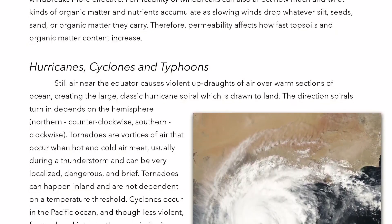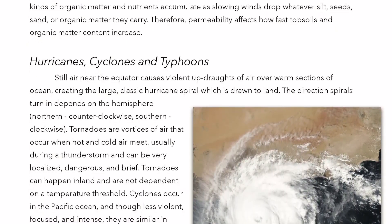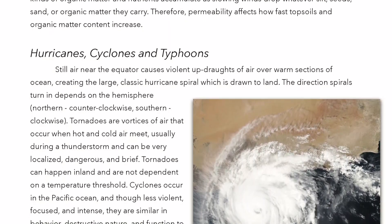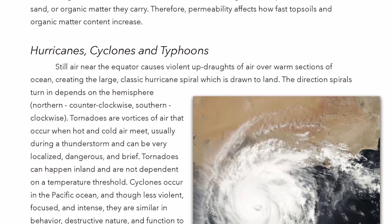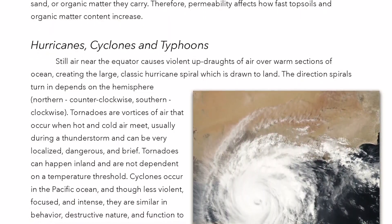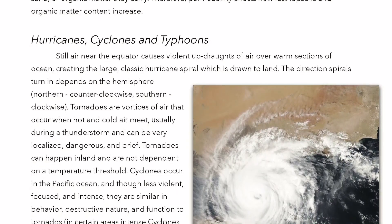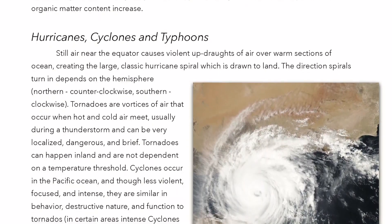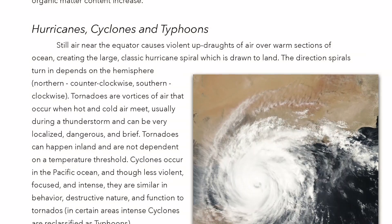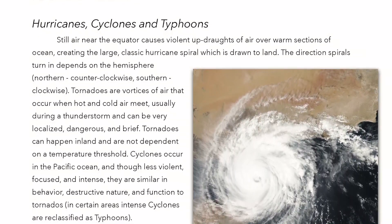Still air near the equator causes violent updraughts of air over warm sections of ocean, creating the large classic hurricane spiral which is drawn to land. The direction spirals turn depends on the hemisphere — northern counterclockwise, southern clockwise.